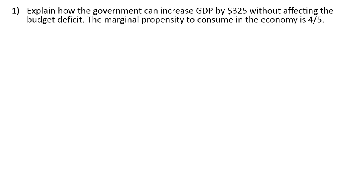In this video we're going to do a balanced budget multiplier problem. Explain how the government can increase GDP by $325 without affecting the budget deficit. The marginal propensity to consume in the economy is four-fifths.